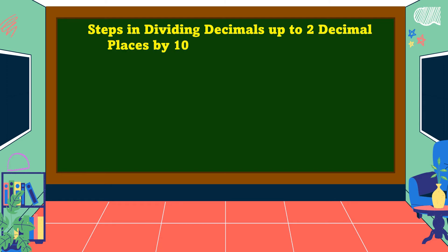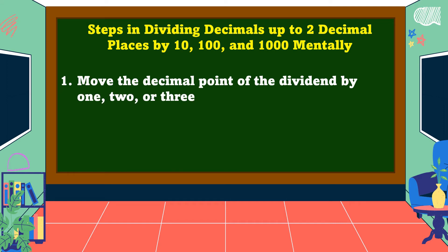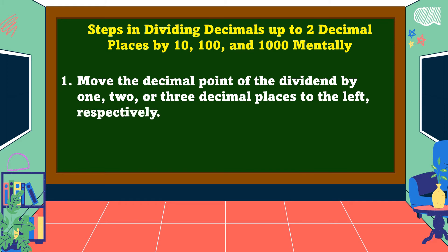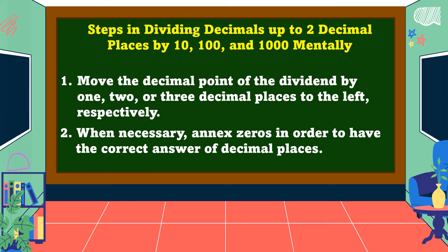These are the steps in dividing decimals up to two decimal places by ten, one-hundred, and one-thousand mentally. Number one, move the decimal point of the dividend by one, two, or three decimal places to the left, respectively. Number two, when necessary, annex zeros in order to have the correct number of decimal places.